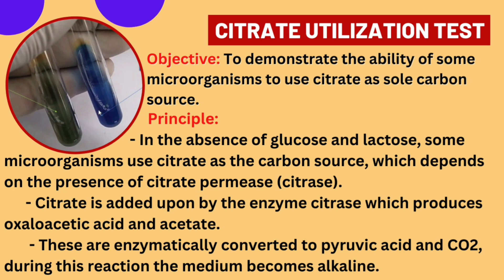In this citrate utilization test, the objective is to determine whether a microorganism can use citrate as its carbon source, which allows us to identify different microorganisms. The principle is that in the absence of glucose and lactose, some microorganisms use citrate as the carbon source, which depends on the presence of citrate permease.